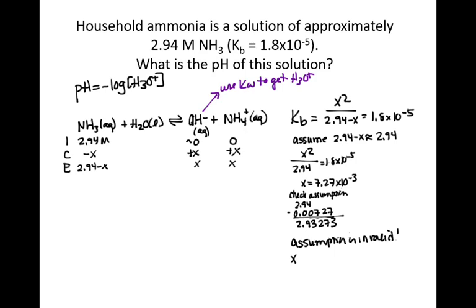So if you do the quadratic equation, I get that you have x squared plus 1.8 times 10 to the minus 5x minus 5.292 times 10 to the minus 5 equals zero. And so if you solve for x, you'll get that x equals 7.26 times 10 to the minus 3 and negative 7.28 times 10 to the minus 3. So the positive one here is the chemically reasonable one. And you'll see that this is really close to the 7.27 times 10 to the minus 3. This assumption was really close. But this way we can see what happens if it doesn't really work out.